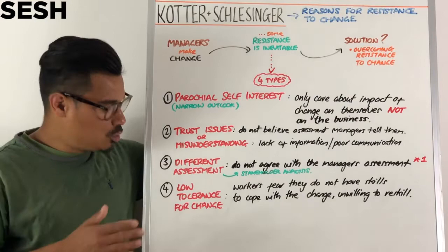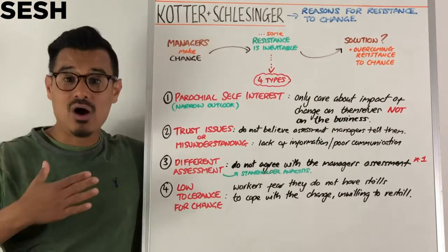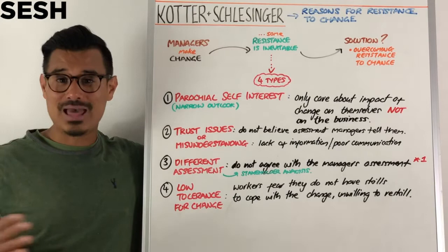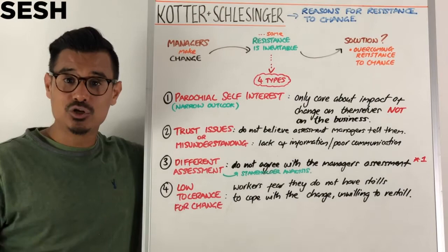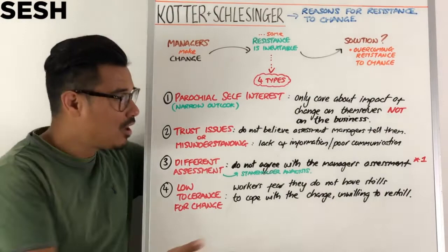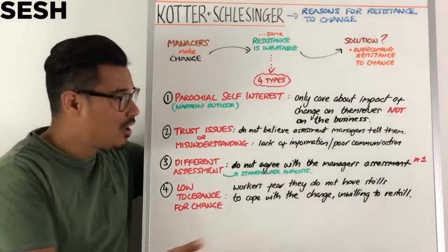Number four is low tolerance for change. I've experienced this personally in my previous life in banking, where I would go in and build trading systems at banks, and the operations departments were not happy with me. They hated that I would come up with new solutions because they knew they would eventually have to learn new technology. Workers fear they do not have the skills to cope with the change, and they may be unwilling to retrain or don't believe they can reskill themselves. I hope that helps with Kotter's resistance to change — see you at the next session.